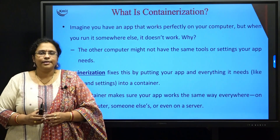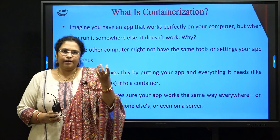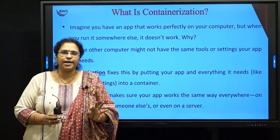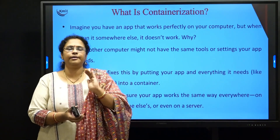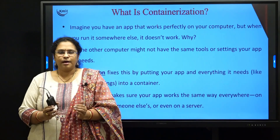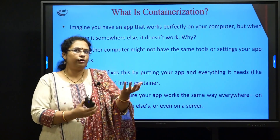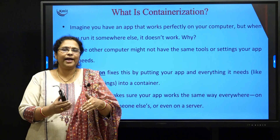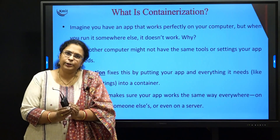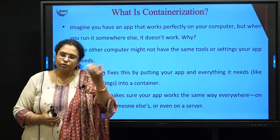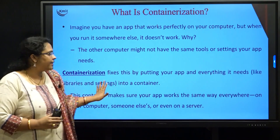This is called containerization. You write a configuration file along with your application in which you give all the necessary instructions — which libraries to download, what commands to run, and how to run the application. You attach it to your application and then build it into an image. An image is nothing but a ready-made option that you put into your Docker Hub. Whoever downloads that image runs it in a container, and all the installations mentioned in the configuration file get automatically executed and the output is displayed.